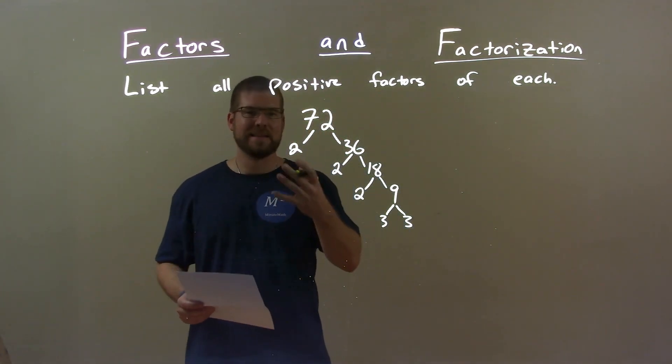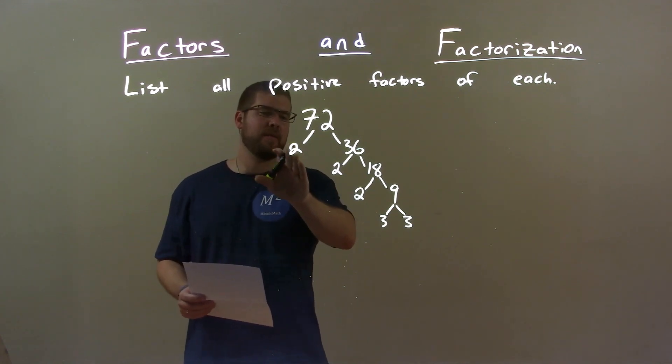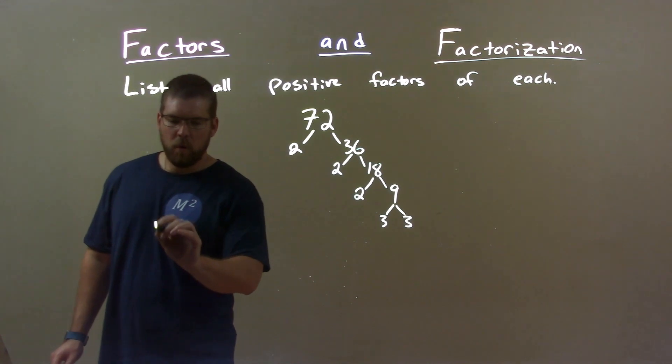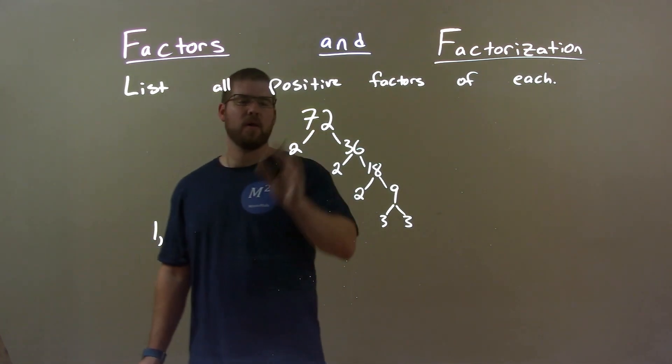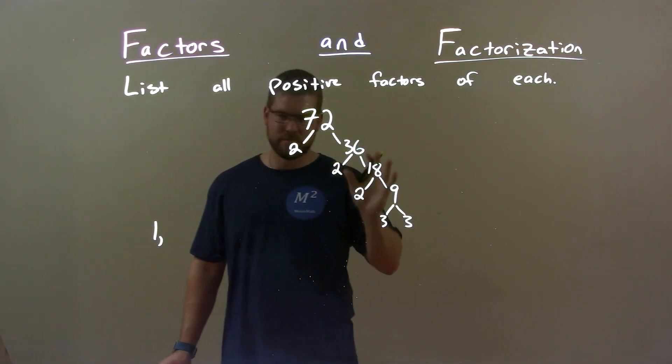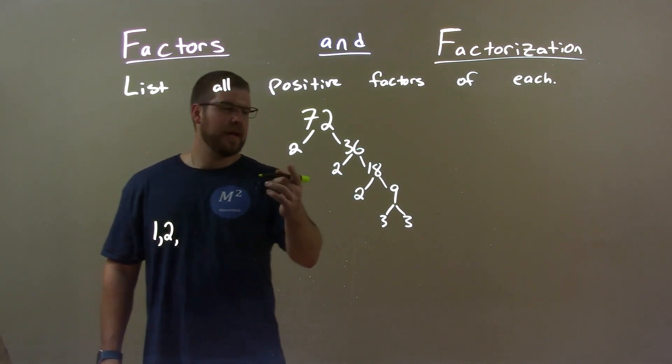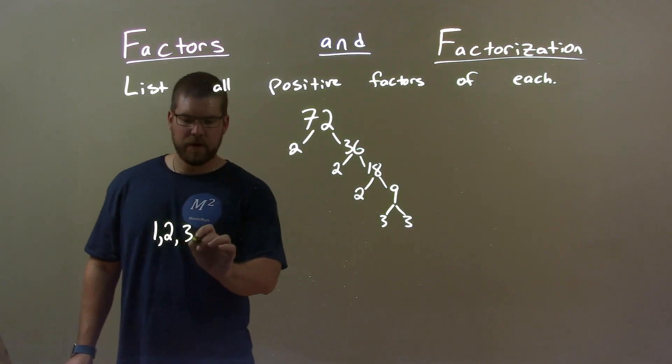Now I want to compile my list by all the numbers that can be multiplied using these prime numbers. 1 is always going to be an answer. The 1 and the number itself will always be an answer, right? 2 is up there. Great. Can I get 3? Well, 3 is right there. 4. 2 times 2 is 4. Great.